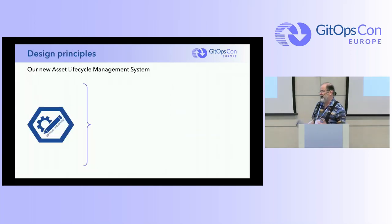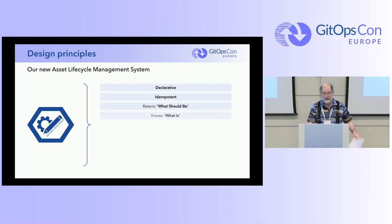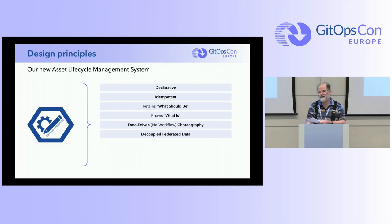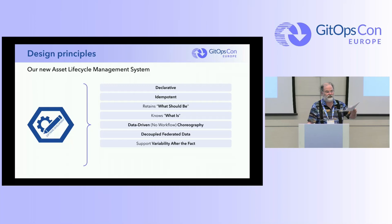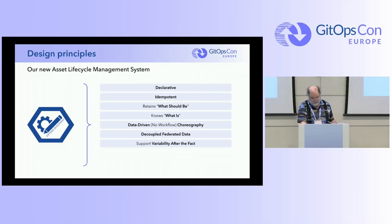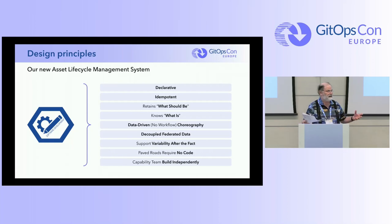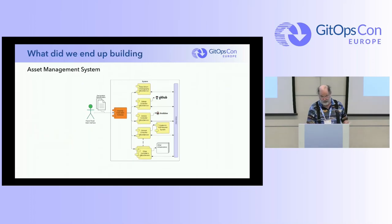We needed to develop what we called an asset lifecycle management system. Following GitOps principles, we wanted it to be declarative, idempotent, retaining what should be, and knowing what is so we could do the diff. We wanted it to be data-driven — not build a workflow for every single pattern, which was getting unmanageable fast. The data for each resource (Jenkins for Jenkins, Git for Git) would be the true source of truth, yet from the user's perspective it had to all operate as one. It had to support changes after the fact, be low/no-code for pattern creators and developers, and allow all teams to work independently.